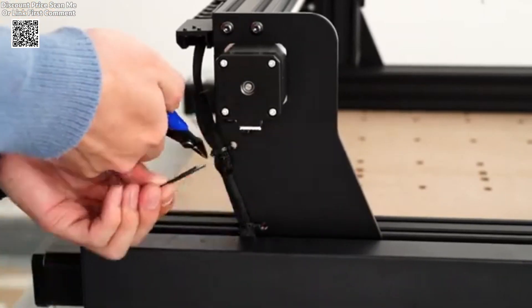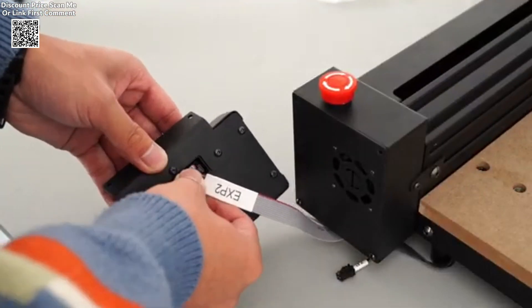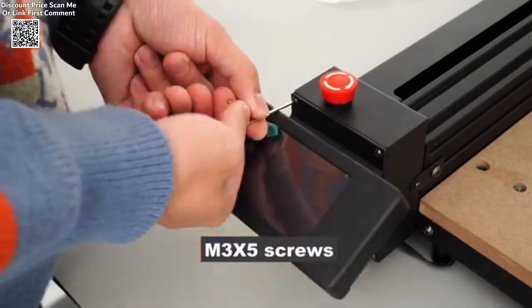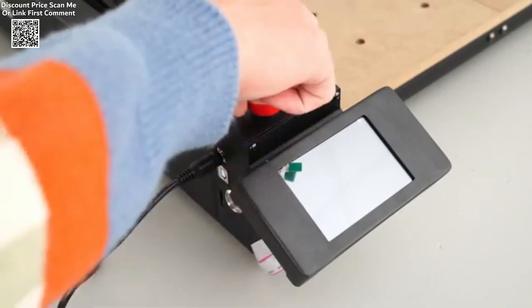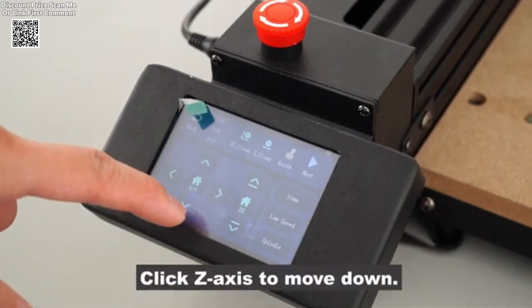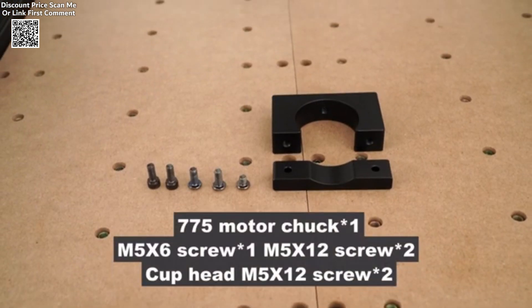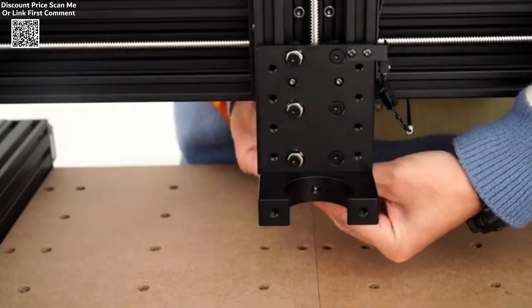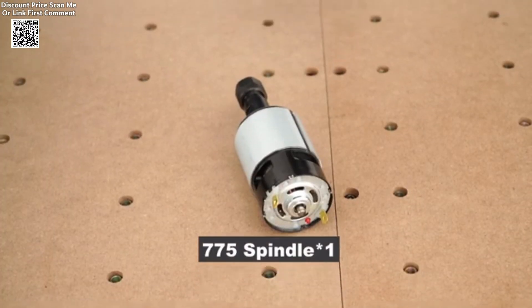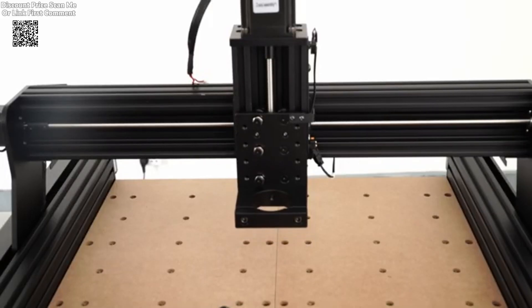Safety and convenience are also prioritized in the TTC450's design. The machine includes an emergency stop switch and harness management with XY energy chains, ensuring safe and organized operation. With a shipping weight of 20kg, the TTC450 is robust yet manageable, making it a practical choice for various settings.